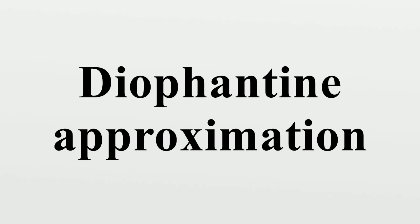Diophantine approximations also have important applications in the study of Diophantine equations. Given a real number alpha, there are two ways to define a best Diophantine approximation of alpha. For the first definition, the rational number p/q is a best Diophantine approximation of alpha if for every rational number p'/q', different from p/q, such that 0 < q' ≤ q. For the second definition, the above inequality is replaced. A best approximation for the second definition is also a best approximation for the first one, but the converse is false. The theory of continued fractions allows us to compute the best approximations of a real number.